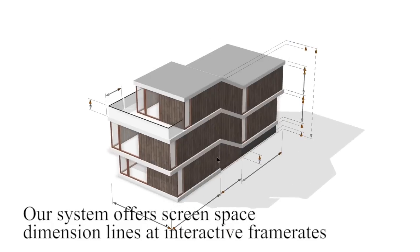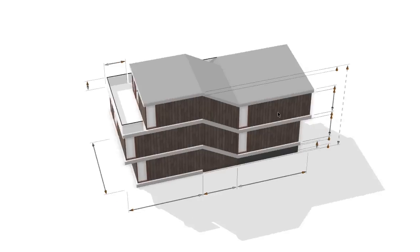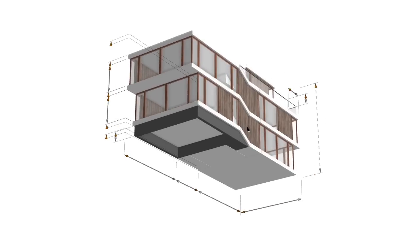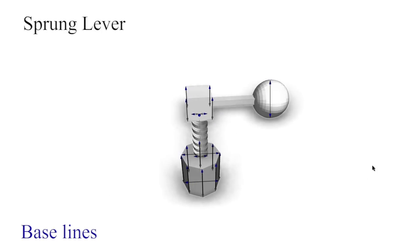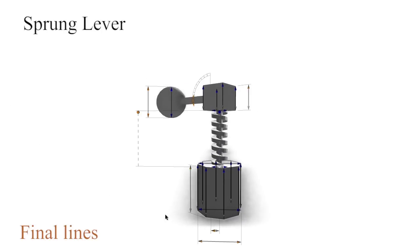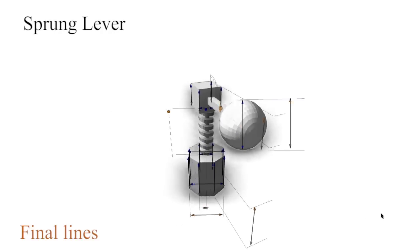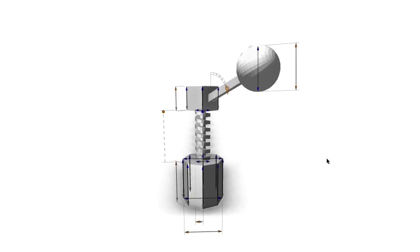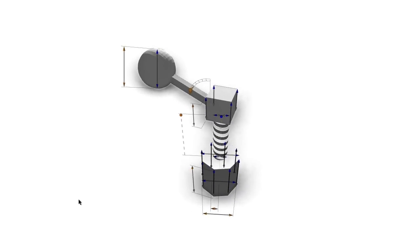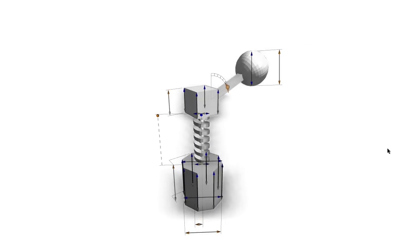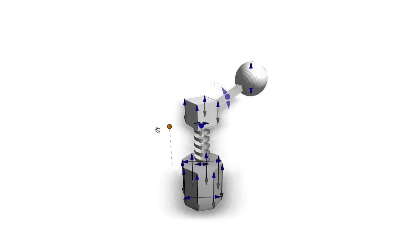Our solution positions the dimension lines away from the geometry. The author defines a set of baselines, shown here in blue, and our system creates final handle locations, shown here in orange. Using the handles, the user can manipulate the model's parameters.